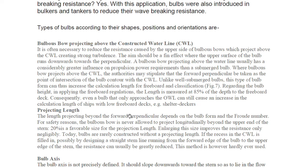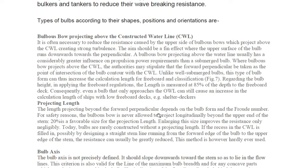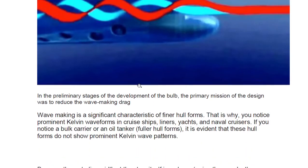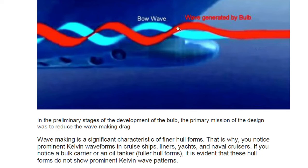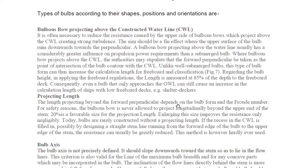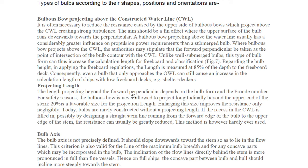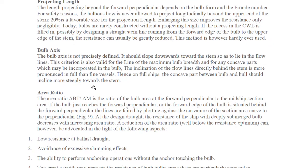The projecting length is the length of the bulb beyond the forward perpendicular. For safety reasons, the bulbous bow is never allowed to project longitudinally beyond the upper end of the stem. Around 20% is a favorable size for the projected length; enlarging it improves resistance only negligibly. Today bulbs are rarely constructed without a projecting length. If the recess in the constructed waterline is filled in by designing a straight stem line from the forward edge of the bulb to the upper edge of the stem, resistance can usually be greatly reduced.